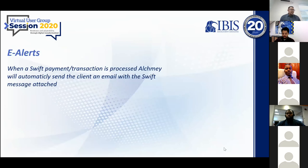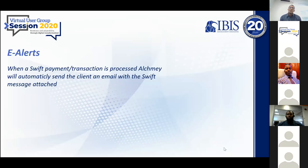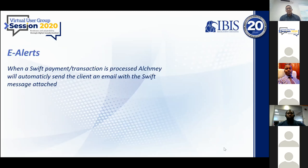One of the last things we have is the e-alerts. These are notifications sent when a debit, credit, or any action occurs on the customer's account — they receive an email notification. What we've done is modify one of the alerts, which is the Swift alert. We can now actually send a copy of the Swift message in the email to the client, in the Swift format being used. So the customer gets an actual copy of the Swift message that is being sent, which they can use as evidence of processing.